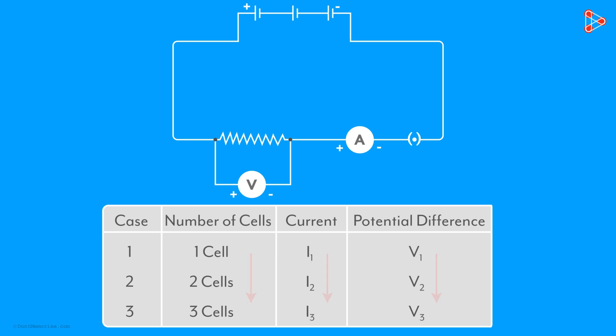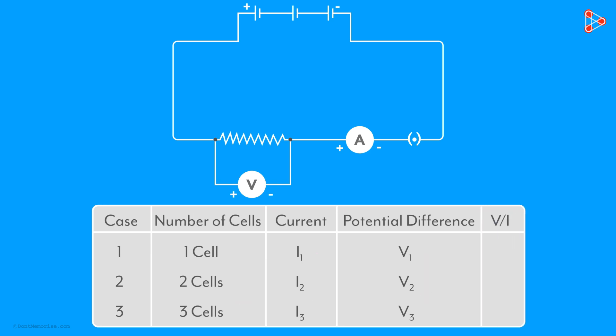To know that, we add an additional column at the right which calculates the value of V over I for each case. You will notice that the ratio of potential difference to the current in each case will approximately be equal.